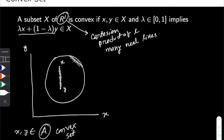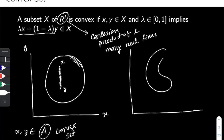Now let's look at an example of a set which is not convex. In the two-dimensional R2 space, if we think of a set that looks like a donut and pick two arbitrary points on opposite boundaries and connect them, all the possible combinations sitting on that connecting line are not contained within this set. So this is not a convex set.